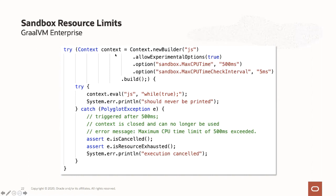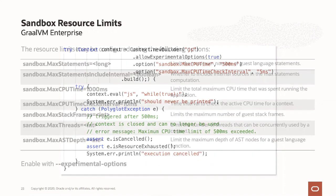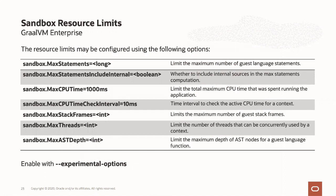Looking at the sample code: I'm building a context running some JavaScript, I've enabled the experimental options, and I'm setting the max CPU time to 500 milliseconds. Within this JavaScript execution environment, the application can only run for 500 milliseconds. The test application is a simple while-true loop, which of course runs forever. Because of the 500-millisecond limit, it gets interrupted — we catch that exception and report that the application has exceeded its allocated CPU time. Resources we can constrain include maximum number of statements, CPU time, stack frames, and number of threads.